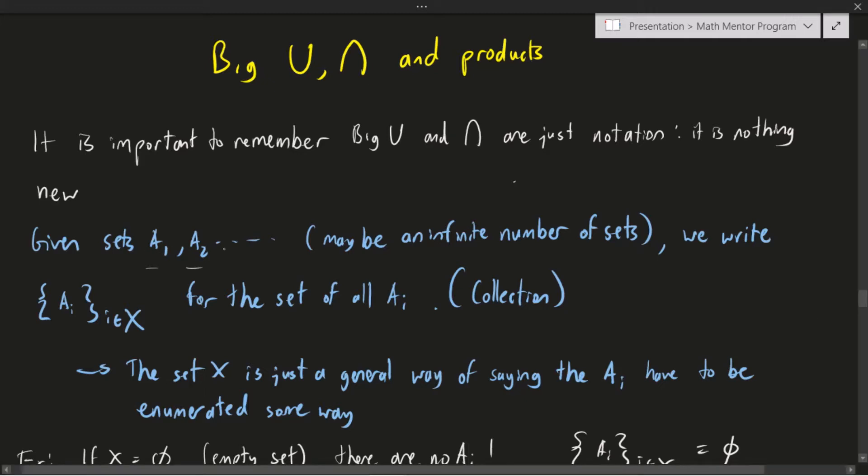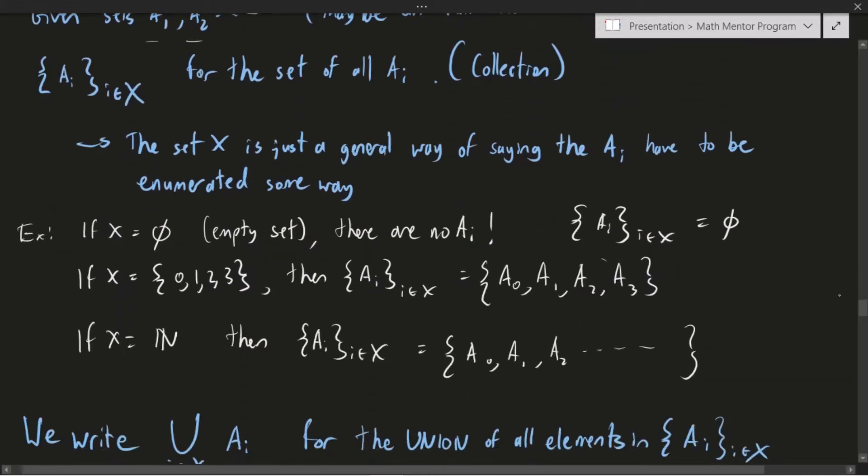So here I started with 1, 2, but we didn't have to start with 1, we could have started with 0, we could have only had a finite number, we could have gone just 0, 1, 2, or we could have gone for an infinite number of naturals. So for example, if my indexing set X is the empty set, we will have no Ai in the collection, because there is nothing in the empty set. So in particular, there cannot be an Ai, and so the collection of all the Ai is just going to be empty.